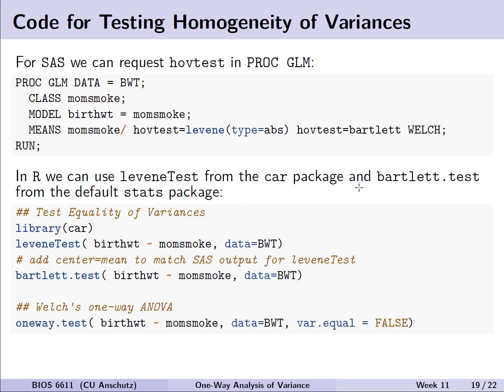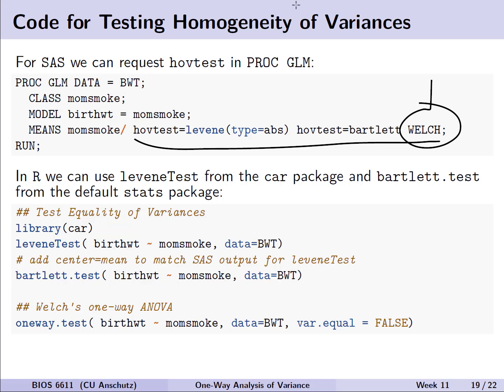In SAS, we can specify tests for homogeneity of variance using HOV tests in PROC GLM, and request Welch's ANOVA with the Welch statement. In R, we can use Levene's test from the car package or Bartlett's test from the base stats package. We then fit Welch's ANOVA with the oneway.test function, specifying var.equal equals FALSE.